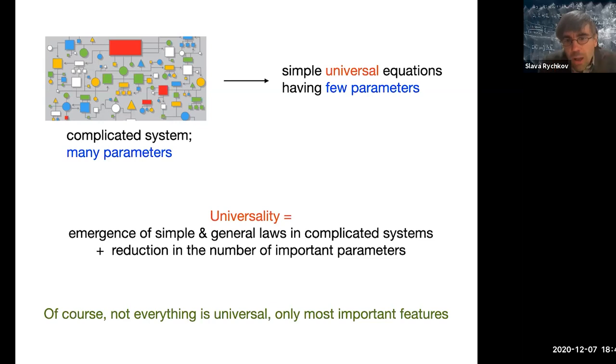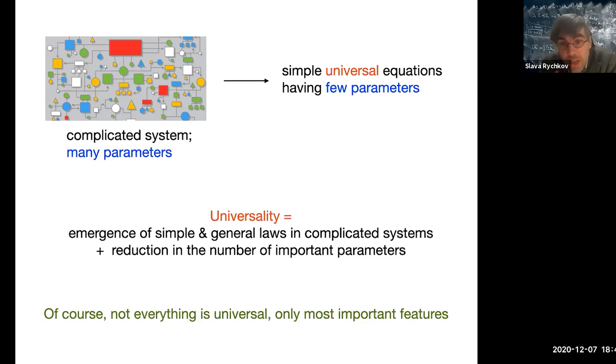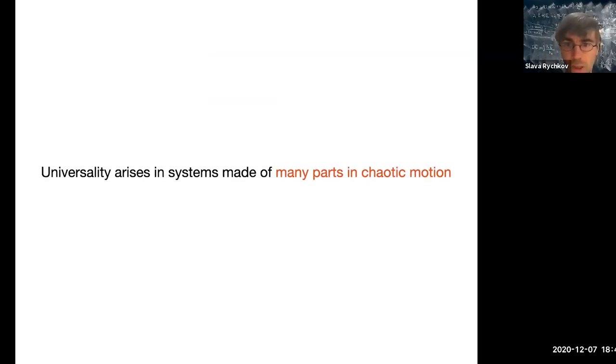This is probably rather abstract — just a definition — but now I'm going to show you some concrete examples of physical systems where this universality as I described is realized. A common feature of these examples is going to be that all the systems will be made out of many particles, many parts, in chaotic motion.